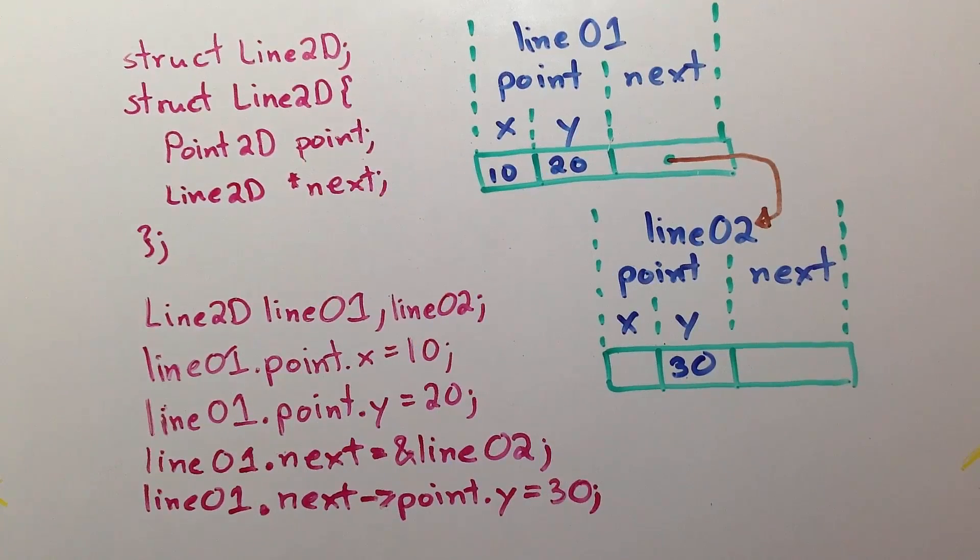Now, you might be asking, where is line02? Let's look at the other form without the arrow.